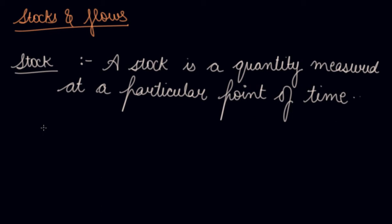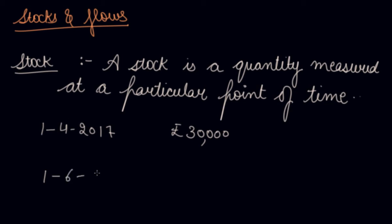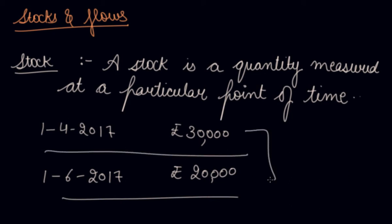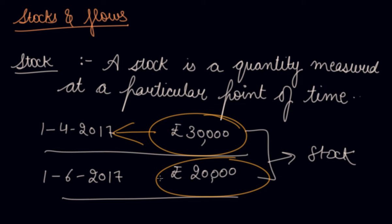For example, if you go to a bank and see on 1st April 2017 you have rupees 30,000 as your bank balance, and then on 1st June 2017 you have 20,000 as your bank balance — this is a stock. You are measuring a quantity at a particular point of time: at this point it is 30,000 and at this point it is 20,000.